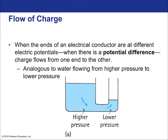The flow of charge: at the ends of an electrical conductor — remember, a conductor is just a medium through which free electrons can easily move — if they are at different electrical potentials there is a potential difference. We talked about this before: it was the volt, with units of joules per coulomb. When you have that potential difference, charge flows from one end to the other. It is analogous to water flowing from high pressure to low pressure until both sides of a U-shaped tube are at equal levels.